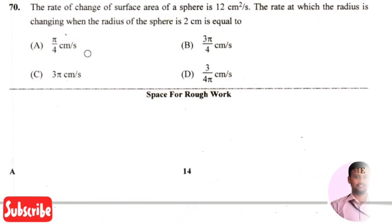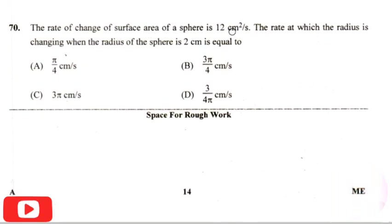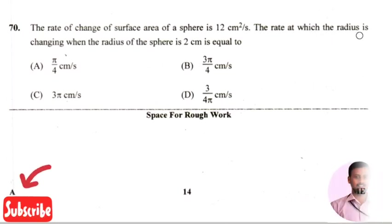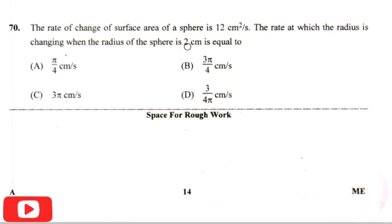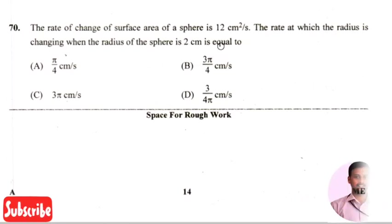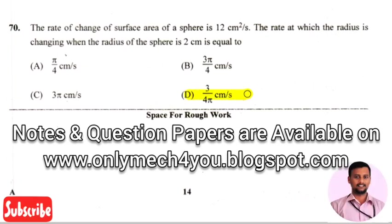The next question: the rate of change of surface area of a sphere is 12 centimetres squared per second. The right answer is option 4, that is 3 divided by 4pi centimetres per second.